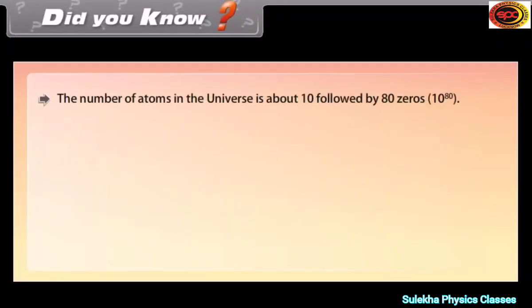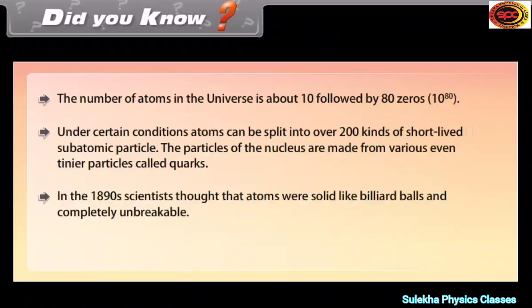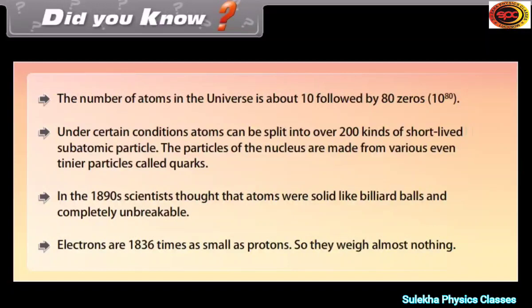Did you know? The number of atoms in the universe is about 10 followed by 80 zeros. Under certain conditions, atoms can be split into over 200 kinds of short-lived sub-atomic particles. The particles of the nucleus are made from even tinier particles called quarks. In the 1890s, scientists thought atoms were solid like billiard balls and completely unbreakable. Electrons are 1836 times as small as protons, so they weigh almost nothing.